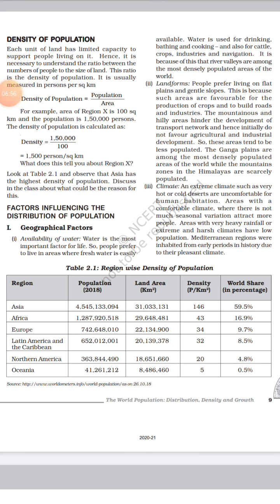The Mediterranean region can be understood as the boundary area between Africa and Europe around the Mediterranean Sea. Countries like Turkey, Spain, and Egypt have very pleasant climates, and as a result their populations are quite dense.